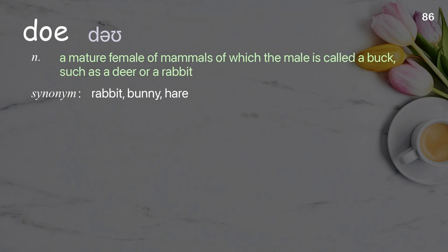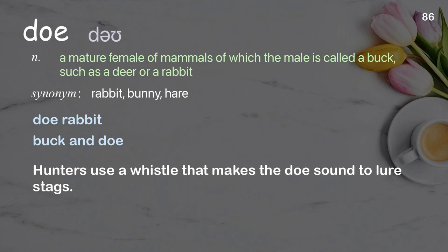Doe: a mature female of mammals of which the male is called a buck, such as a deer or a rabbit. Examples: buck and doe. Hunters use a whistle that makes the doe sound to lure stags.